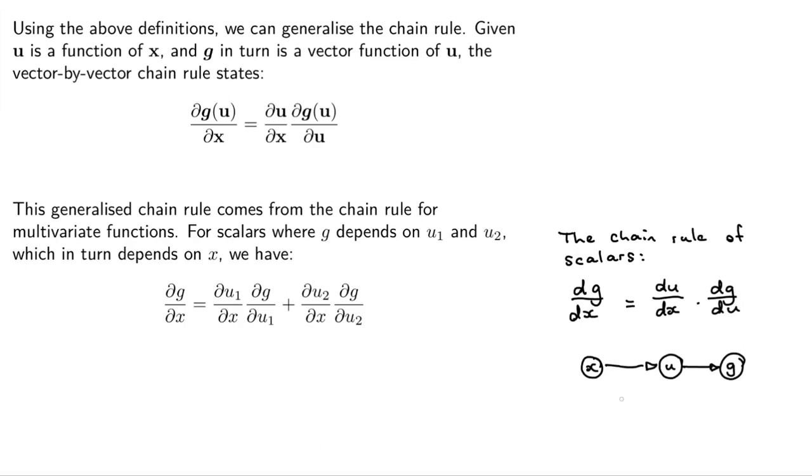And so you have this kind of chain that goes this way, where you want to see if I wiggle this, what happens here? It turns out that if I wiggle this, then I wiggle that, and that wiggles that, and the chain rule of scalars tells us how the wiggling is incorporated in order to get the answer that we want.